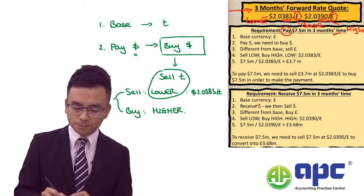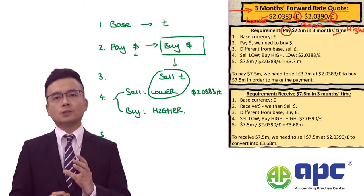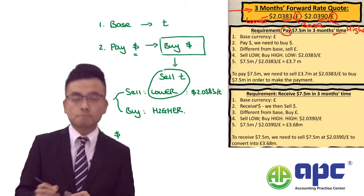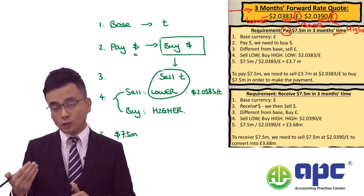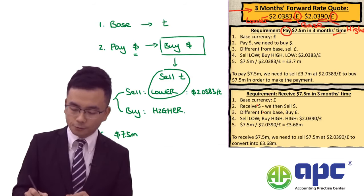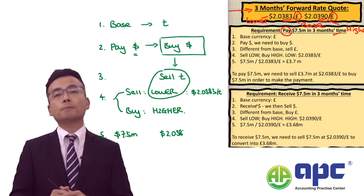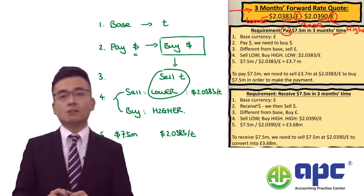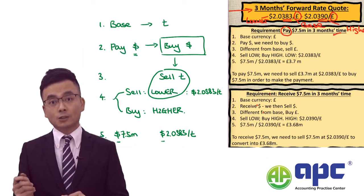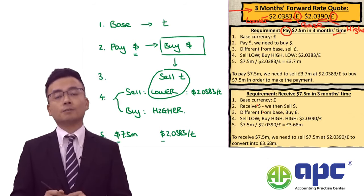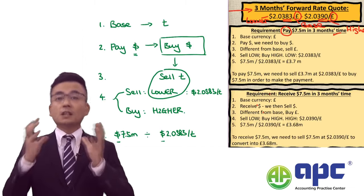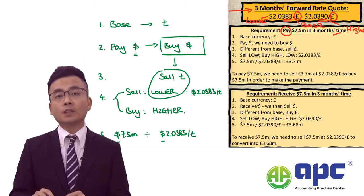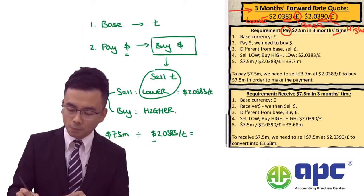As the final step, take the foreign currency amount of 7.5 million and divide by the exchange rate of 2.0383 dollars per UK pound. Because the first currency in the numerator is the same as in the rate, we use division. That gives us 3.7 million UK pounds. So in order to pay 7.5 million dollars in three months' time, we need to sell 3.7 million UK pounds at the agreed forward rate to convert into 7.5 million dollars.